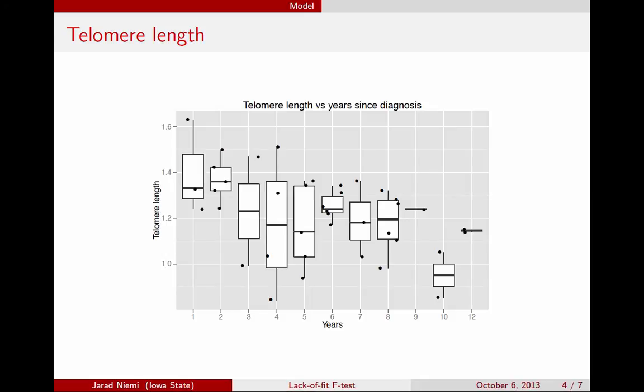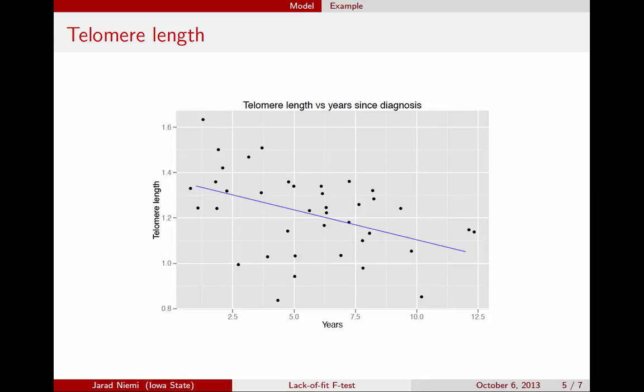So the question then becomes, here's an ANOVA model, and the question is whether this regression model, where we have a straight line fit, is a sufficient representation of the model, or of the data. That is, is it adequate to describe the data?